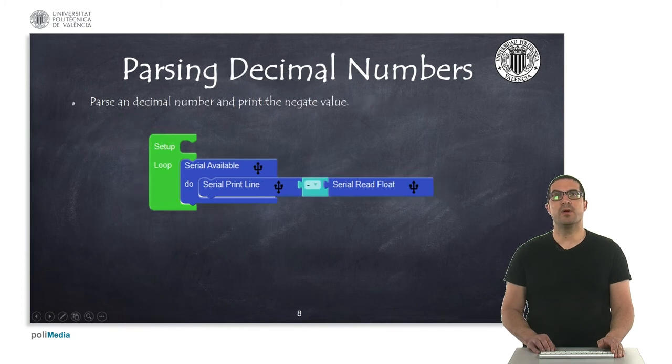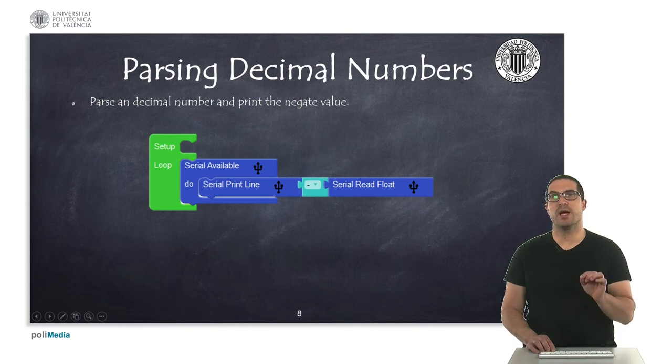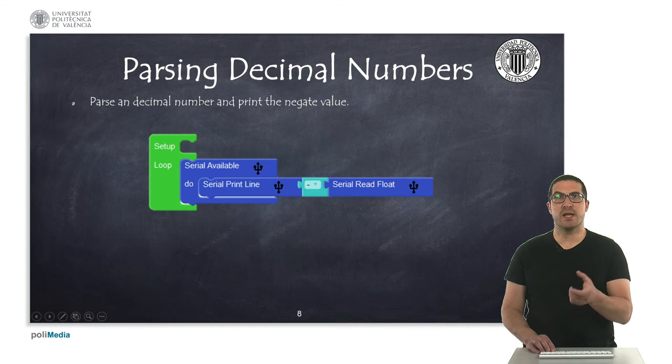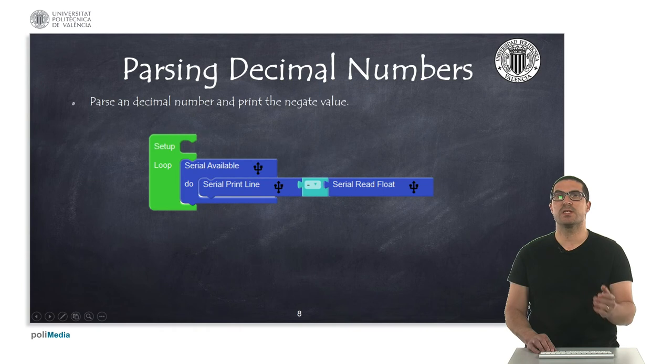In this example, instead of just printing a number, we're printing a decimal number. It has the dot separation. Particularly what we're doing is we are reading this text as a number, and then we negate the value and we print it back. This is an example of how to read a decimal or float number.